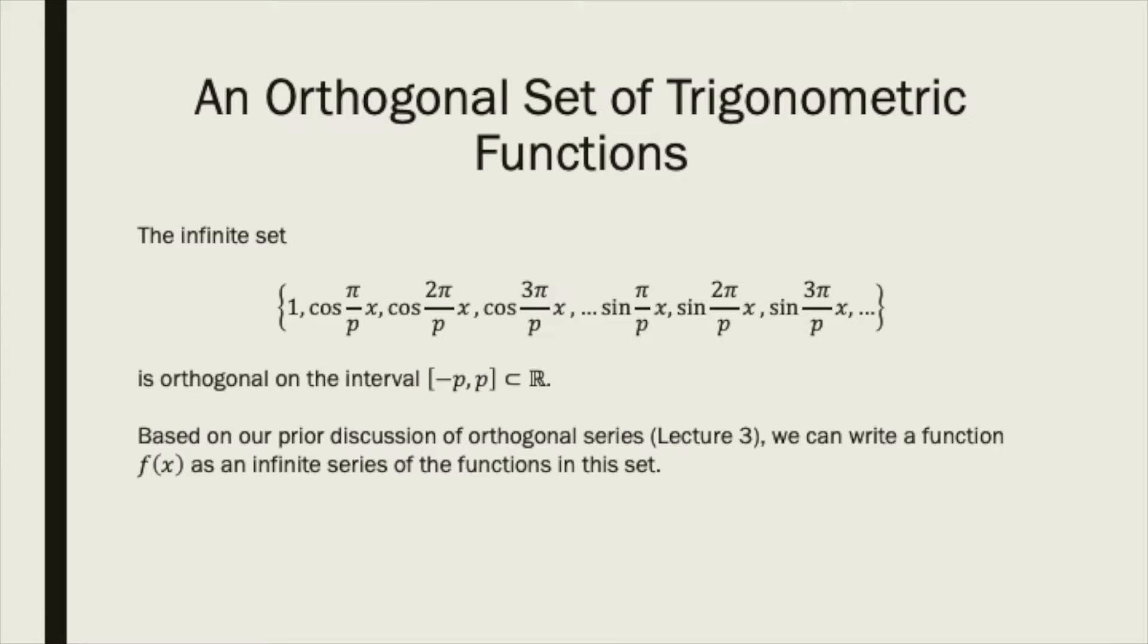This infinite set containing the function identically equal to 1 along with infinitely many cosine and sine terms is orthogonal over the interval on the real line from negative p to p. We have already shown that 1 and the cosines are orthogonal on this interval. The rest you will prove as a homework question.